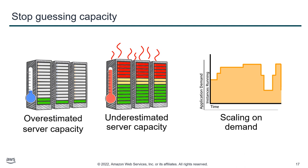If we overestimate, we have a lot of resources acquired and provisioned that are not being used. Underestimating is also a problem in local infrastructure — we purchase lower-capacity servers and then need to add more computation, sometimes requiring hardware replacement. GPUs or even normal machines — the computation we estimated may not be sufficient. But on the cloud we can scale on demand.